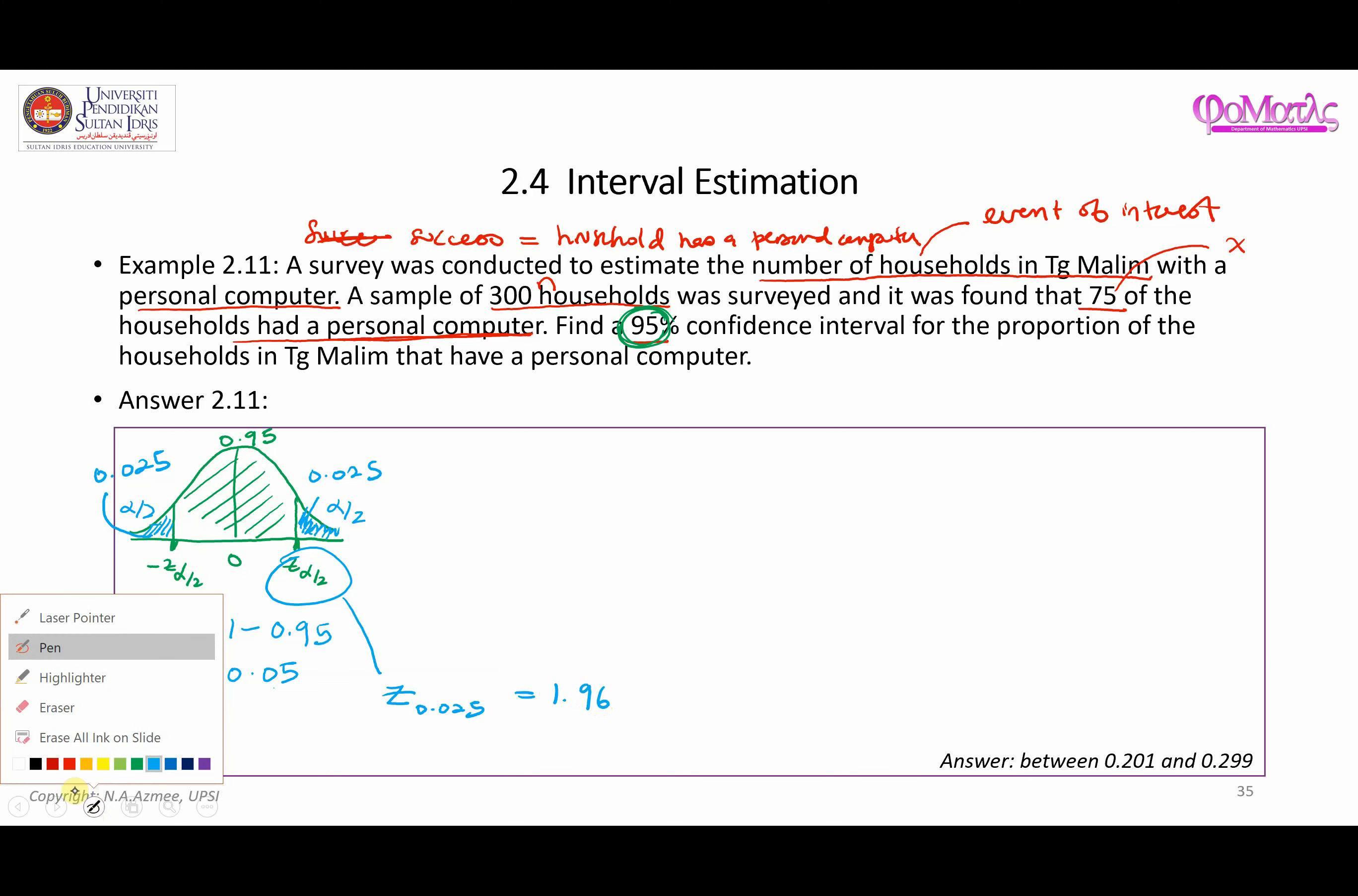Next we are going to apply the formula which is P hat plus minus Z 0.025 times the square root of P hat Q hat over N. P hat is equal to X over N, X is 75, N is 300. So 75 over 300 is 0.25. So here is 0.25 plus minus 1.96, and if P hat is 0.25, therefore Q hat must be equal to 0.75 over 300.